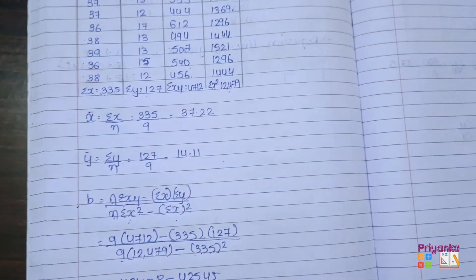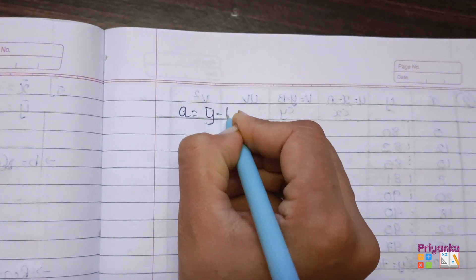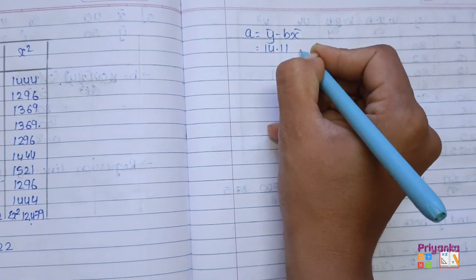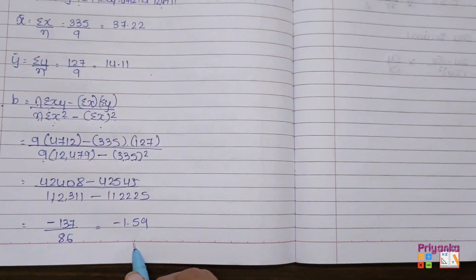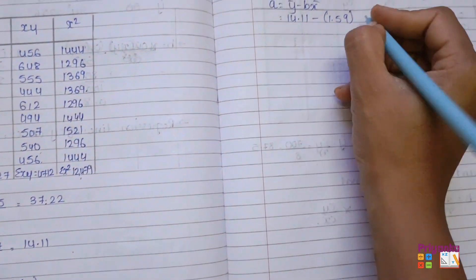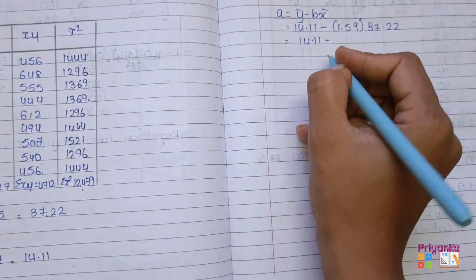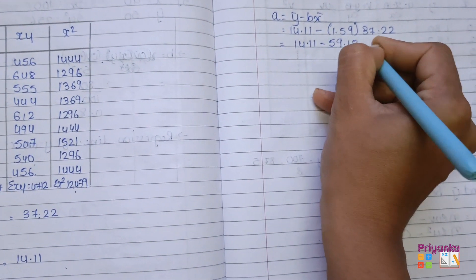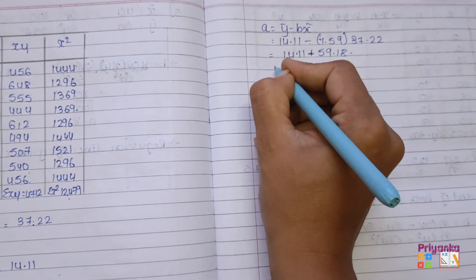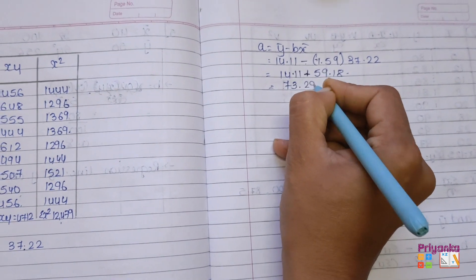The value of b is −1.59. Next we find a using the formula a = y-bar minus b·x-bar. y-bar = 14.11, minus b = −1.59, and x-bar = 37.22. Multiplying gives 59.18, and since minus×minus becomes plus, adding gives a = 73.29.